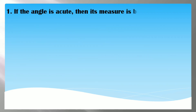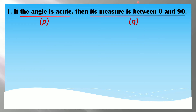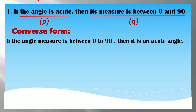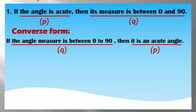Number one: if the angle is acute, then its measure is between 0 and 90. Sa statement na ito, ito yung ating hypothesis at ito yung ating conclusion. Sa converse form, interchange lang natin si hypothesis at si conclusion. Magiging: if the angle measure is between 0 and 90, then it is an acute angle. Nauna si conclusion, kaysa sa hypothesis.